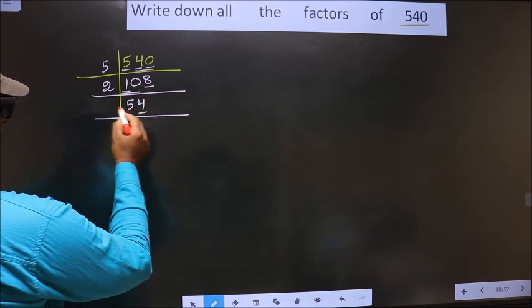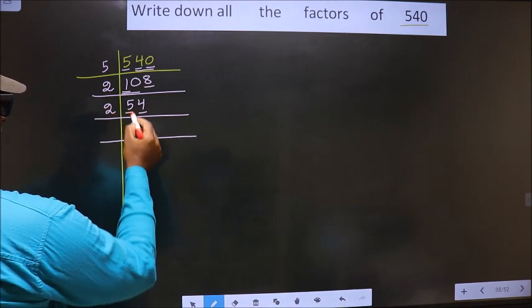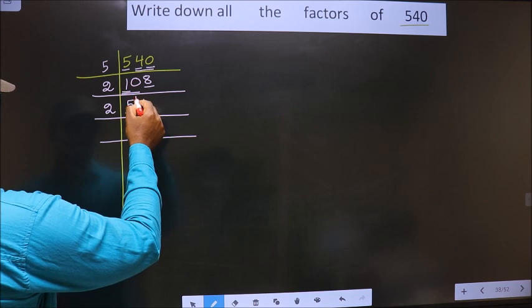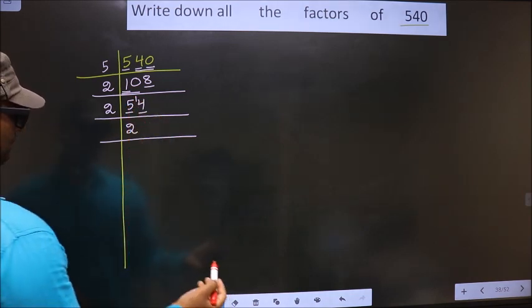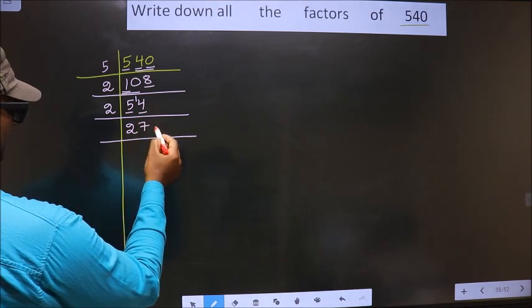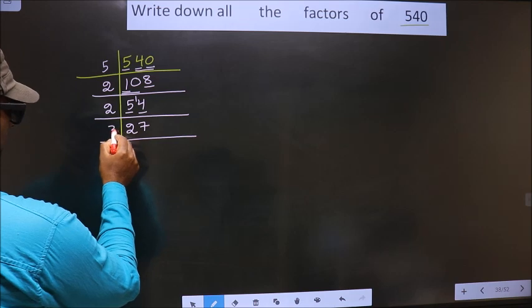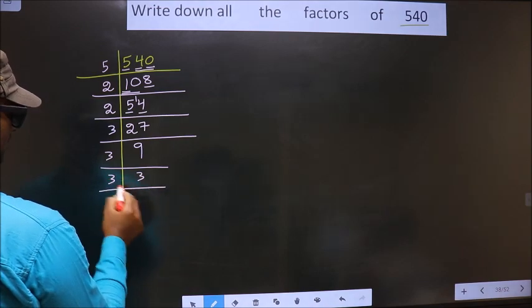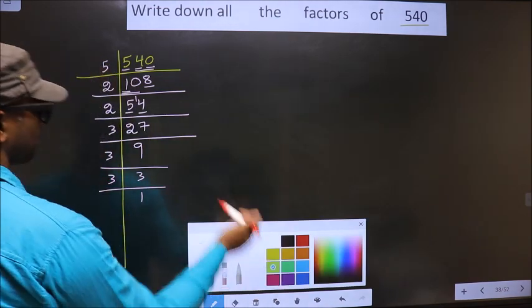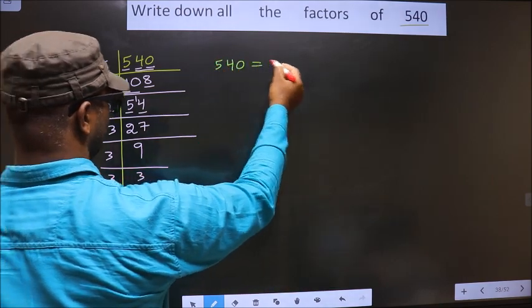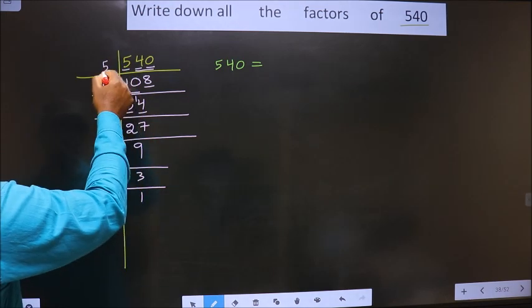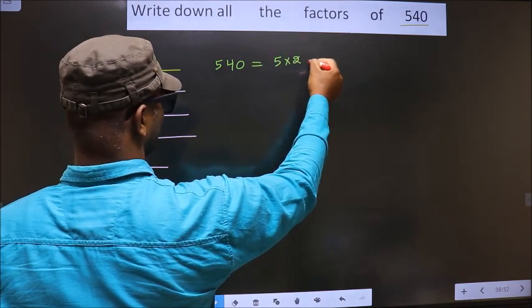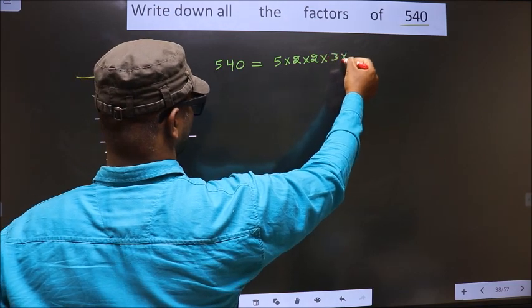For this number, the last digit is 4, which is even, so we take 2 as the divisor. The first digit is 5; a number close to 5 in the 2 table is 2 twos are 4. 5 minus 4 is 1 — carry forward making it 14. When do we get 14 in the 2 table? 2 sevens are 14. So we got 27. 27 is 3 nines; 9 is 3 threes; 3 is a prime number, so 3 ones are 3. Thus 540 equals 5 × 2 × 2 × 3 × 3 × 3.